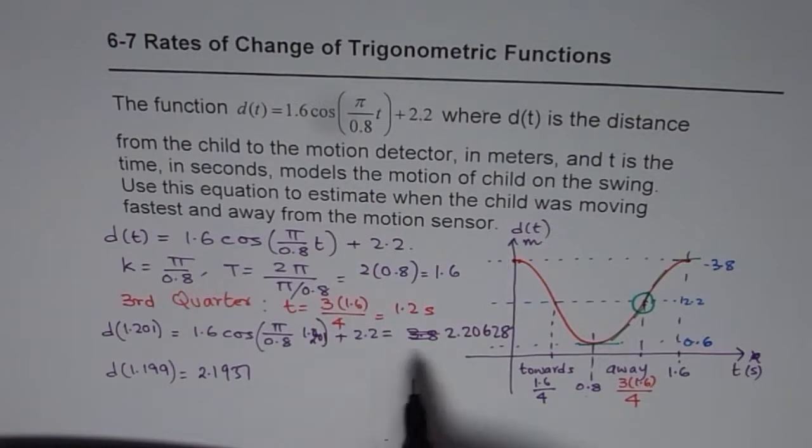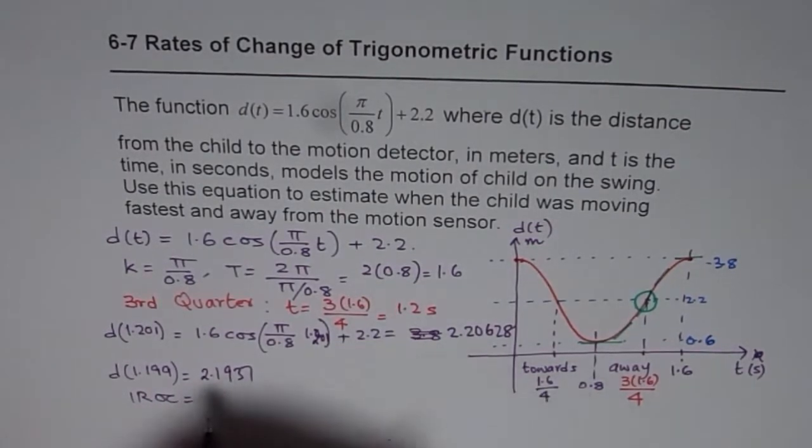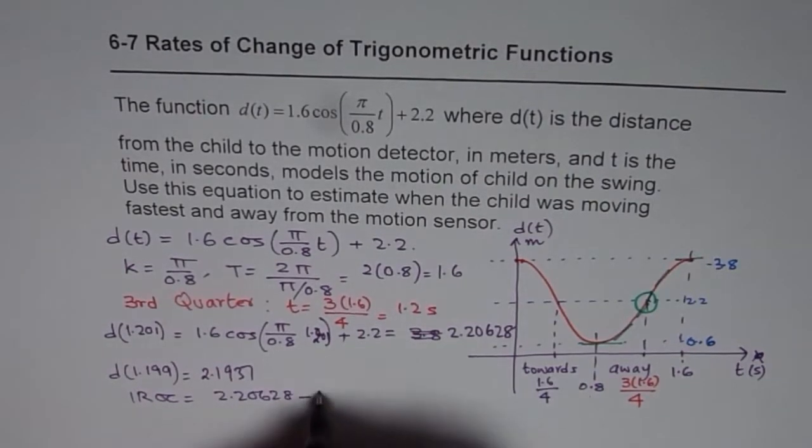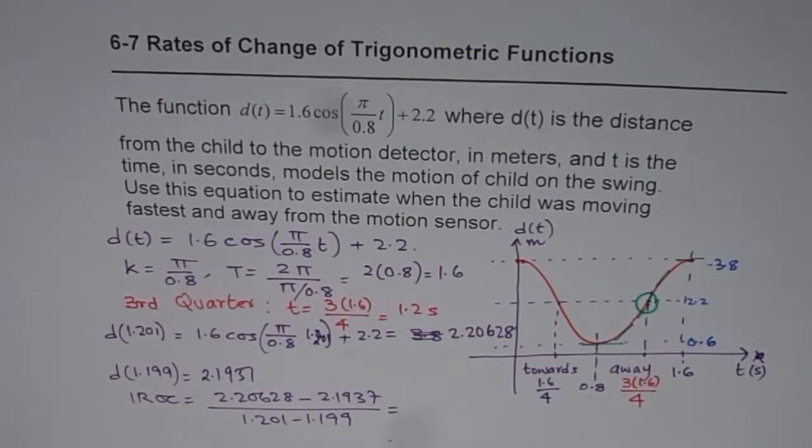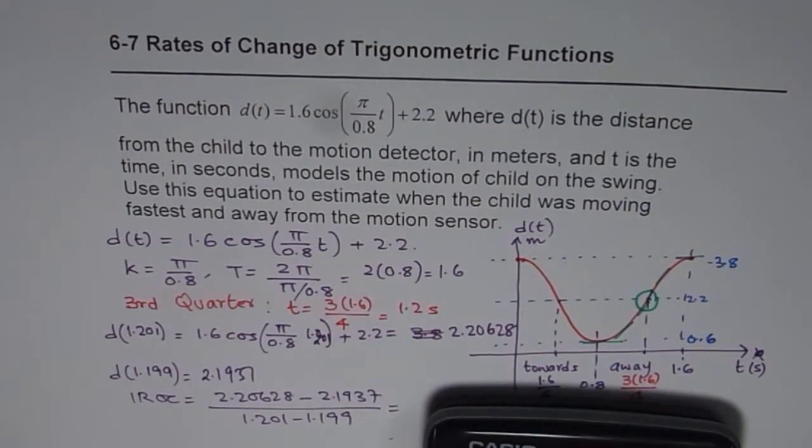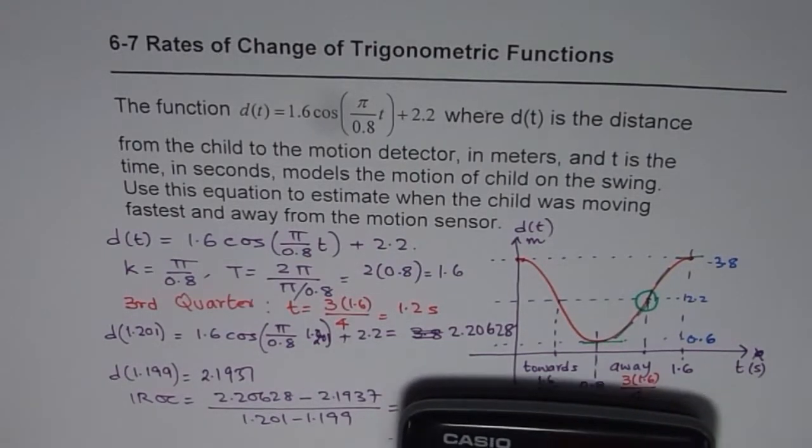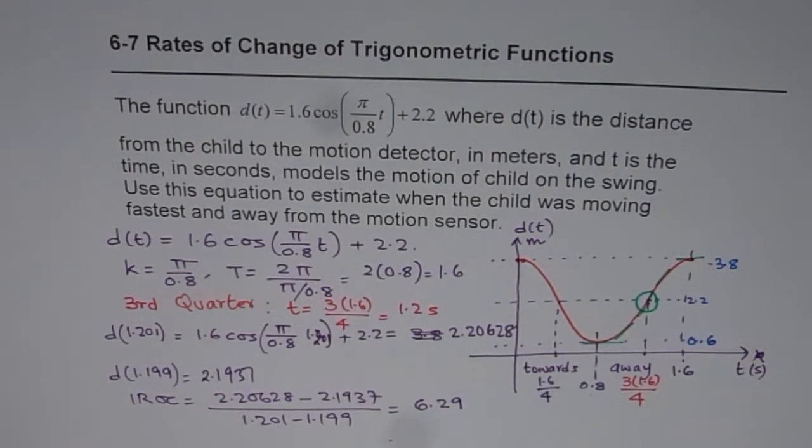Now we will do difference of these two values. Instantaneous rate of change equals to difference of these values, 2.20628 minus 2.1937 divided by 1.201 minus 1.199. That equals to 6.29 divided by 100 which is 6.29 m/s.